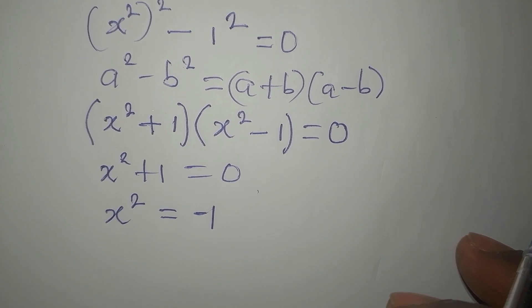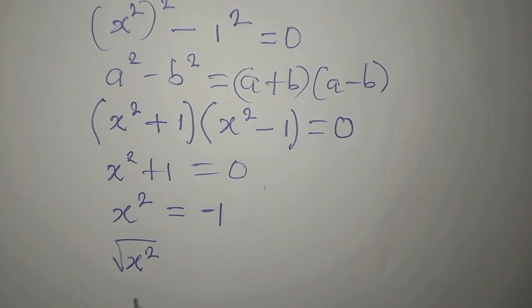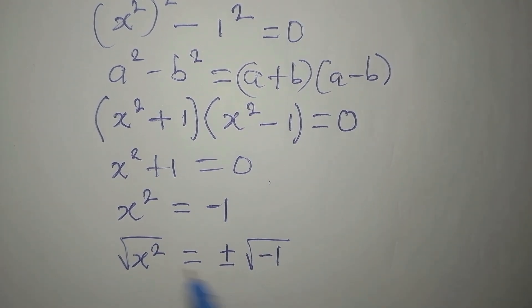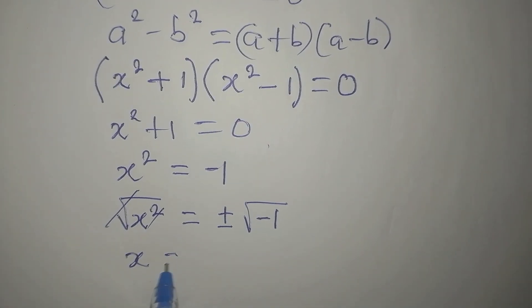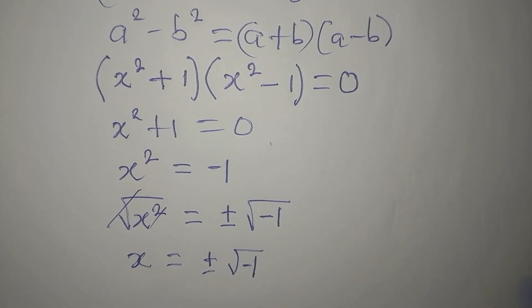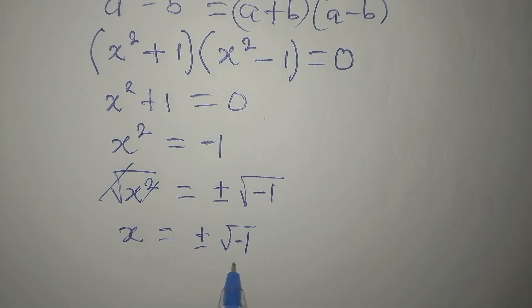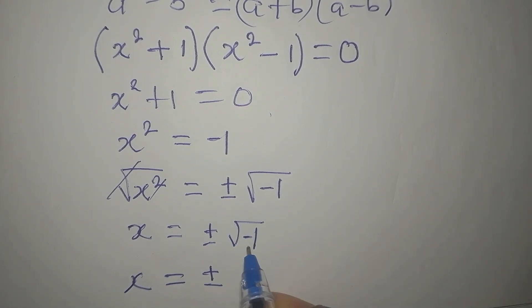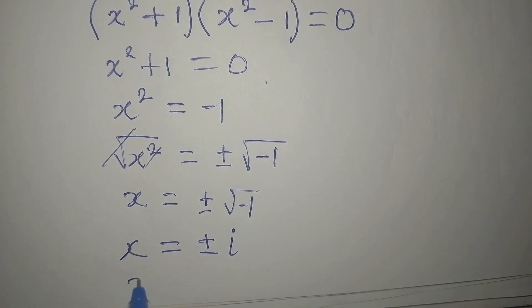Since we are looking for the value of x, we take the square root of both sides. On the right side we have positive or negative square root of negative 1, so x equals plus or minus square root of negative 1. If you press square root of negative 1 on a calculator it gives a math error, which means this is an imaginary solution. We write the square root of negative 1 as i, so this is a two-in-one solution: x equals i or x equals negative i.